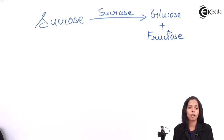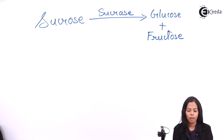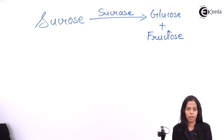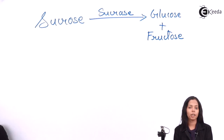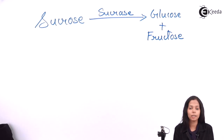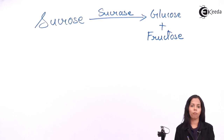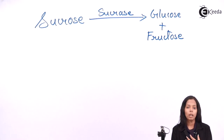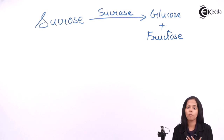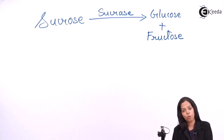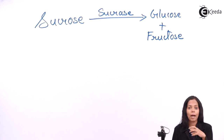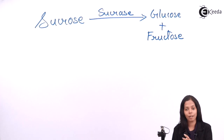Sucrose is broken down into glucose and fructose with the help of sucrase. Note that the enzyme name is based on the substrate name. The last disaccharide to study is lactose, which is found in milk. When you consume milk, the carbohydrate part — lactose — is broken down into glucose and galactose with the help of the enzyme lactase.